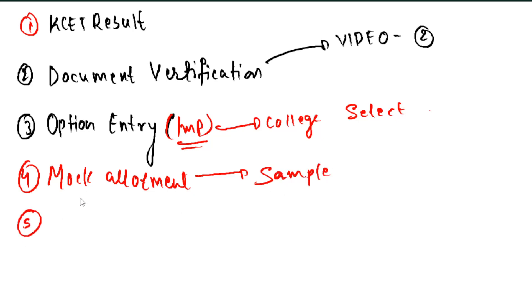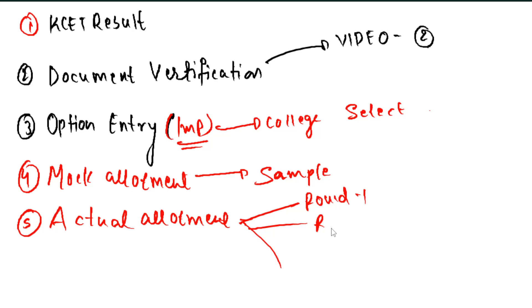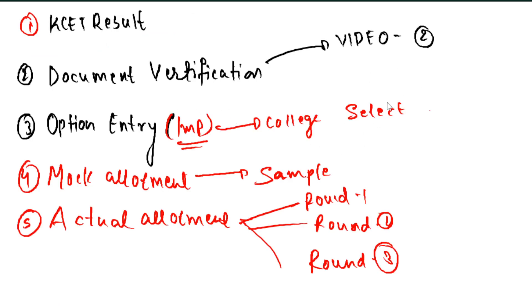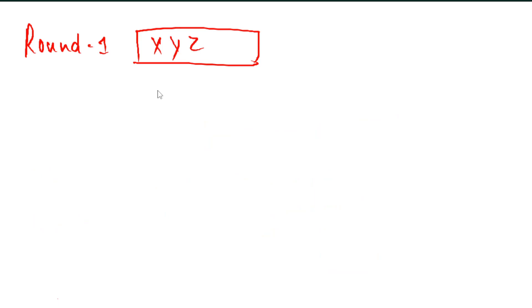After mock allotment, the fifth step is actual allotment. In the actual allotment, there are three rounds - round one, round two, and round three. Each round happens on separate days. There is also a mock-up round. In round one, if any college is allotted to you based on your option entry, you will see which college you got.